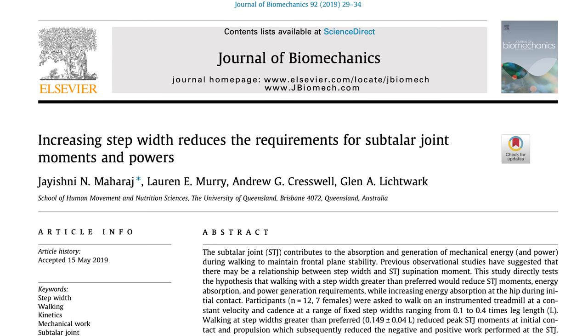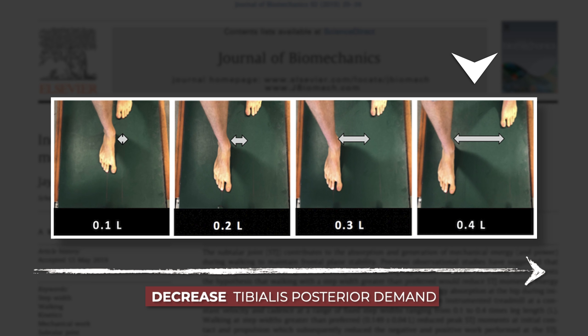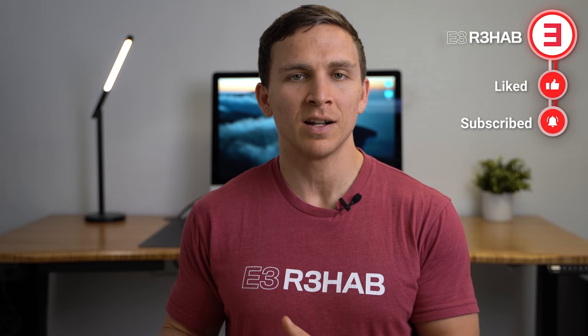There are also other strategies for reducing symptoms during walking and running. A 2019 paper by Maharaj and colleagues demonstrated that walking with a wider step width may decrease the demand on the tibialis posterior during gait. If you normally walk with a very narrow stance, you can increase the distance between both feet so it feels like you're walking on train tracks. I don't recommend this as a permanent change — it's something you might do if you're experiencing symptoms while walking and want to try to offload the tendon a bit.